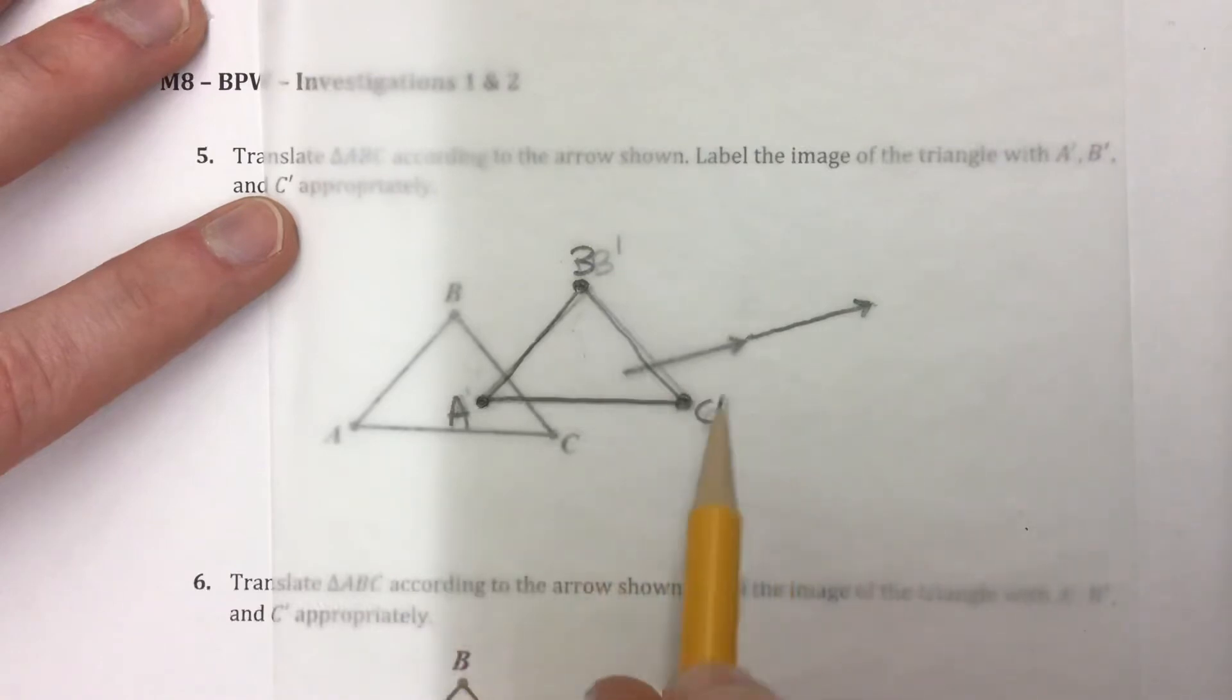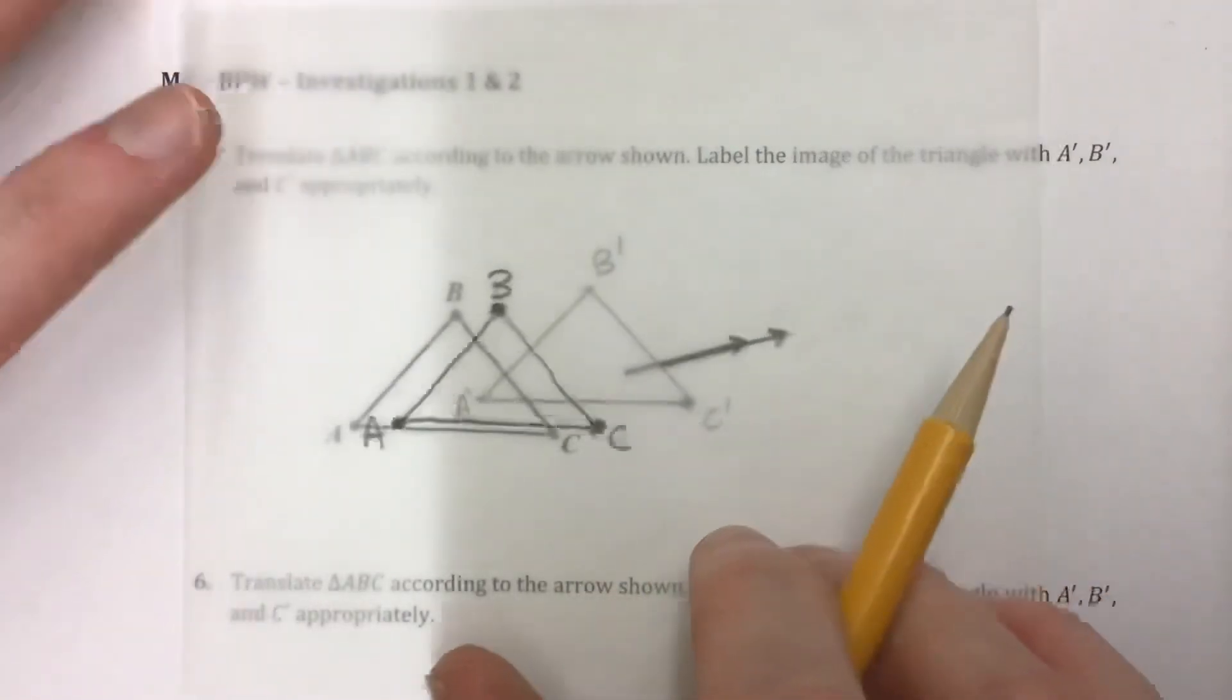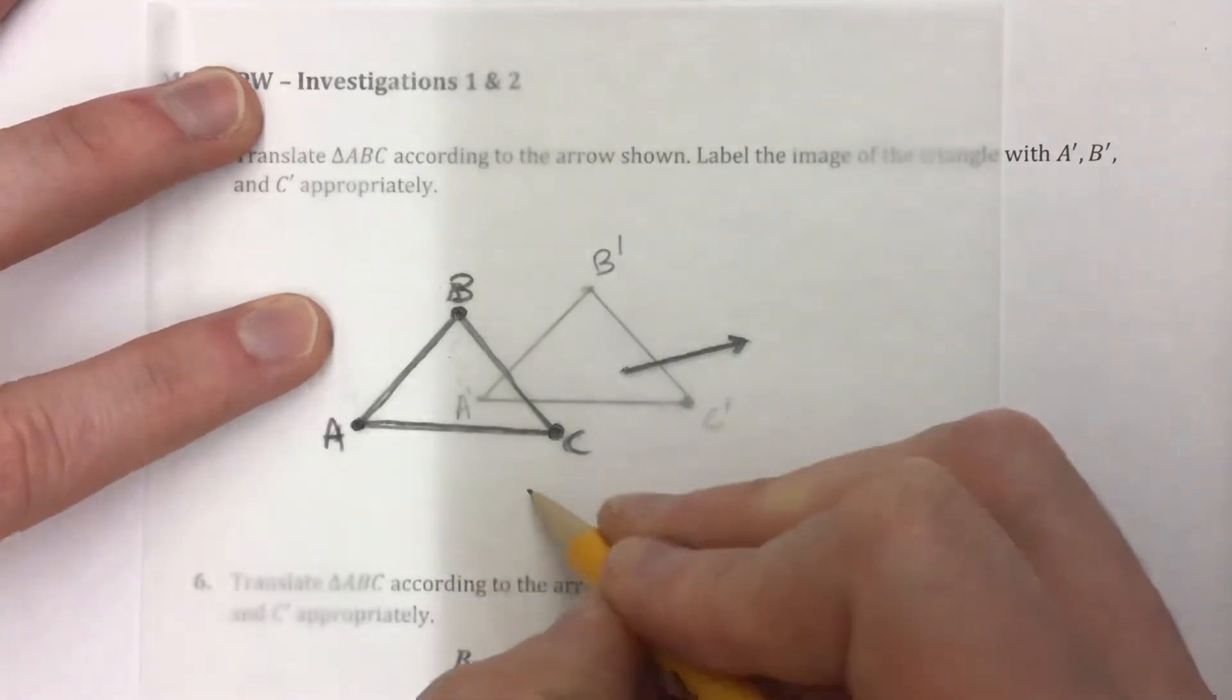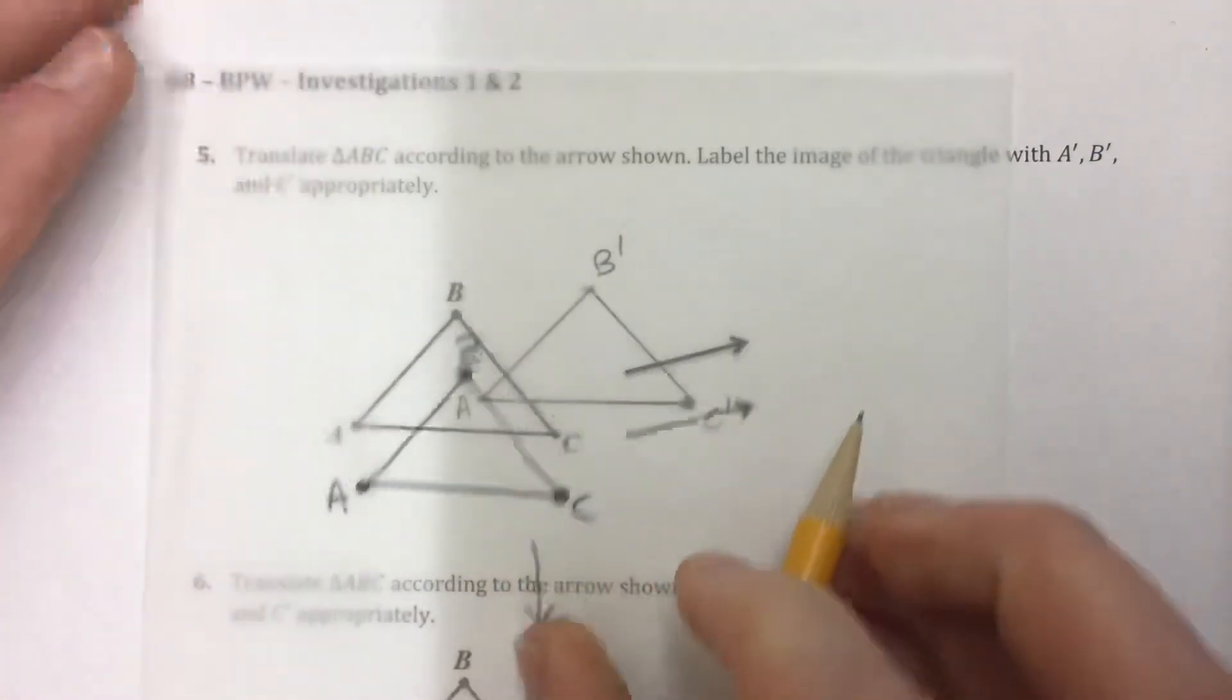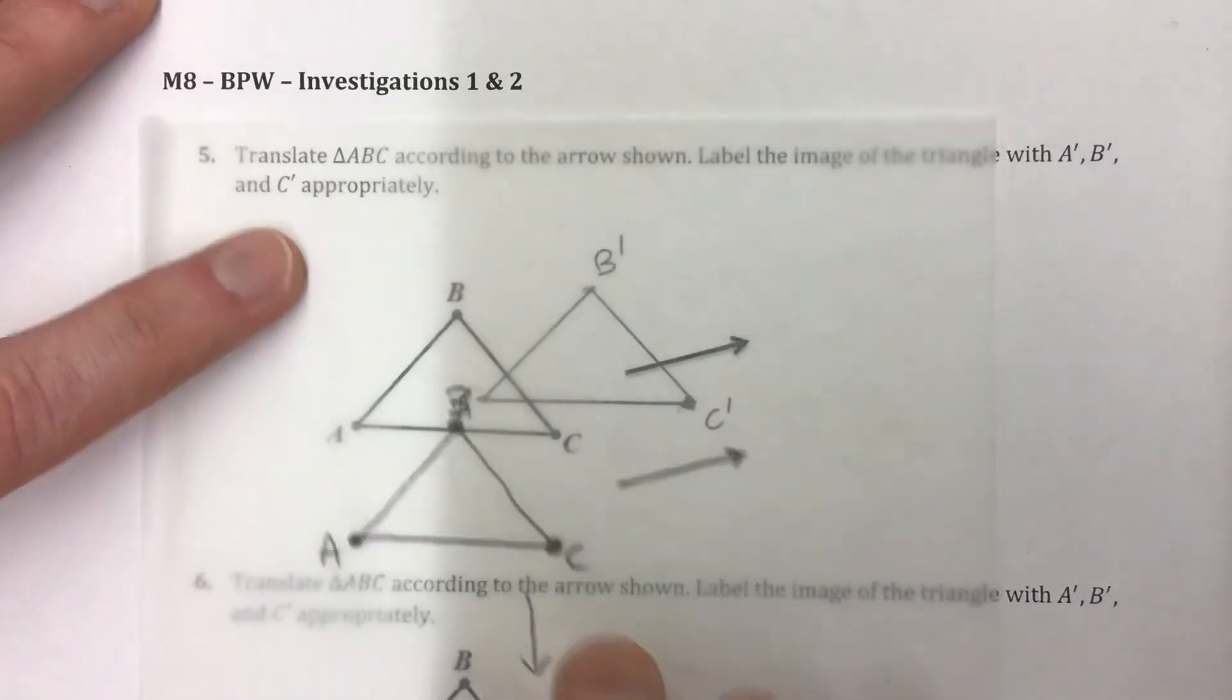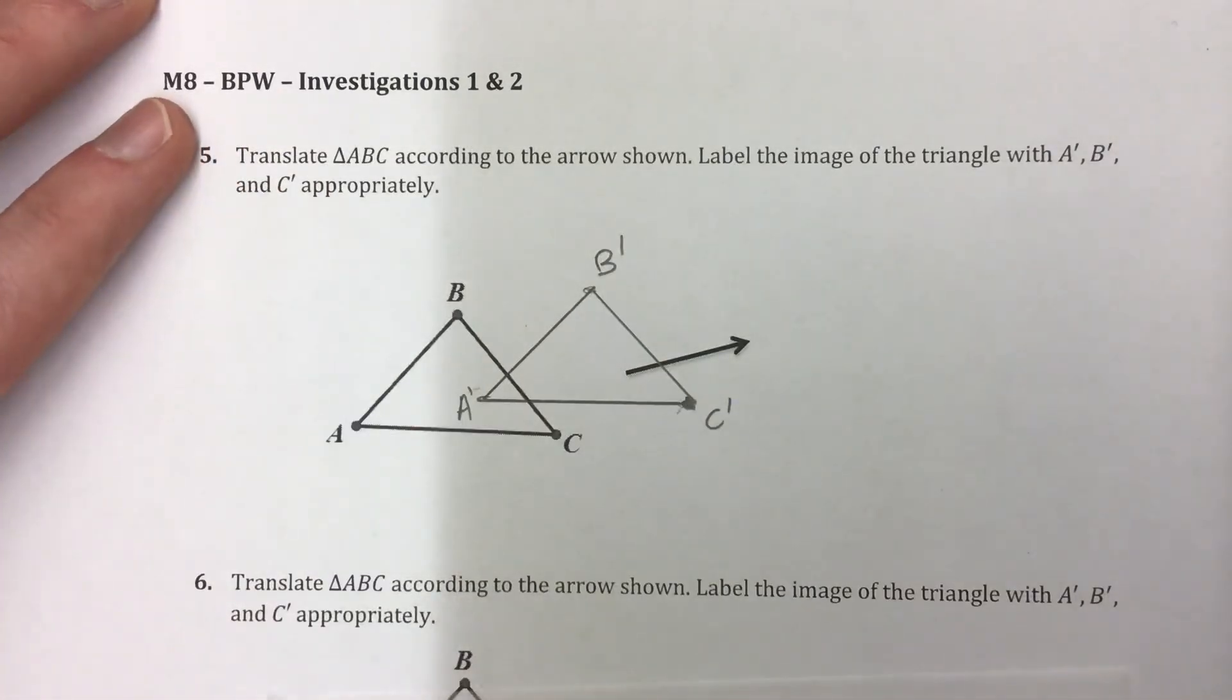Of course the arrow could be anywhere. Whatever direction and distance it's drawn in will just change how far and what direction it goes. It could be drawn over here and then it would just slide down that distance in that direction. Same kind of thing. That's how we do our translations off the grid.